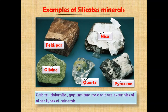Besides the silicate minerals, you can also find minerals like Calcite, Dolomite, Gypsum, and Rock salt in the crust of the earth. All these minerals play an important role in forming the rock.